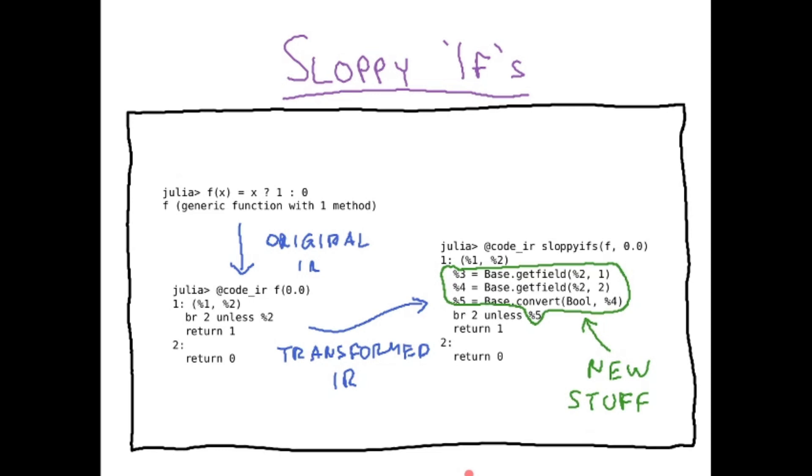And this leads to the ability that you can call the original function with non-boolean arguments in ifs, for example.